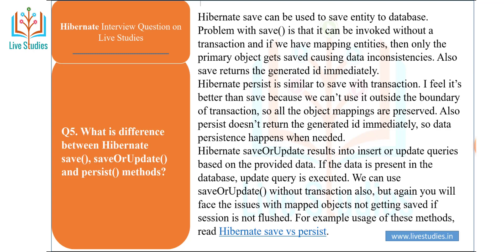Hibernate persist() is similar to save() but with a transaction. It is better than save() because we cannot use it outside the boundary of a transaction, so all object mappings are preserved. Also, persist() does not return the generated ID immediately, so data persistence happens when needed.